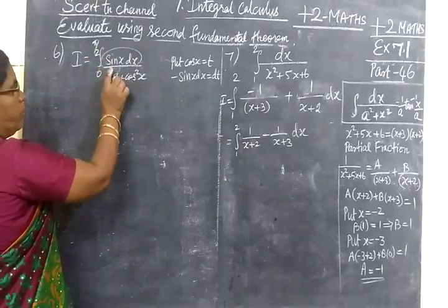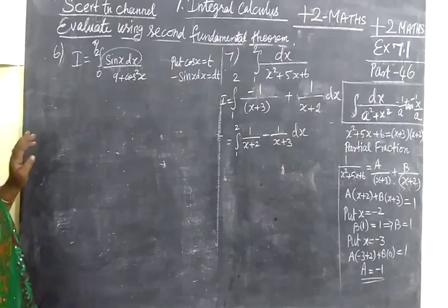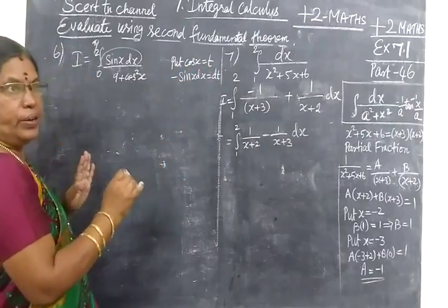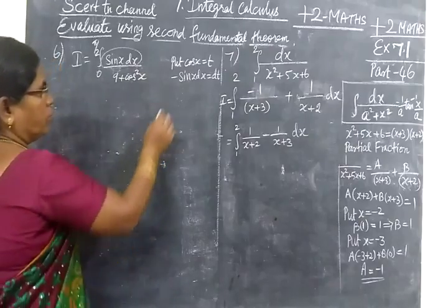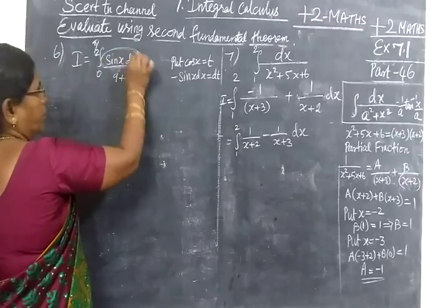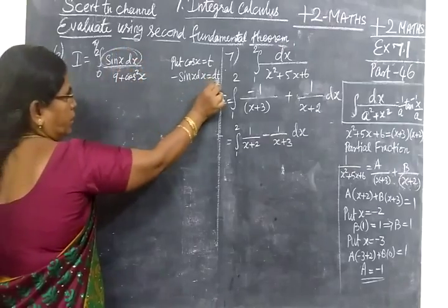integral is 0 to π/2 sin x dx over 9 plus cos² x. Cos x is dt. Why is it convenient? That is t dt. Cos is minus sin x dx equals dt. I am going to take a few steps. Round 1 is dt.